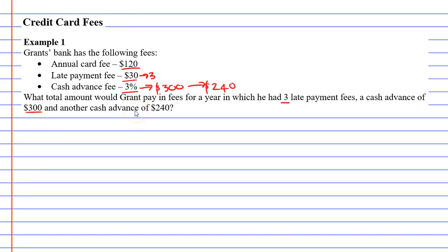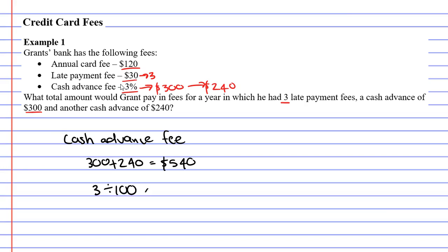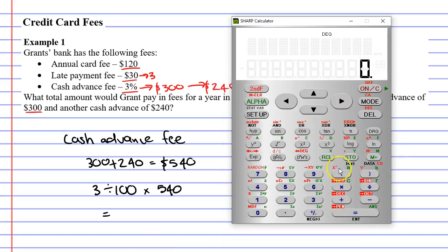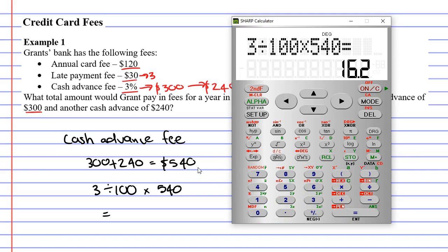Where do we start? I'll start with the cash advance fee, since this is the harder one to calculate. He had two cash advance amounts, so we'll add them up: $300 plus $240 equals $540. He gets charged three percent of that. To calculate three percent, we go 3 ÷ 100 × $540.